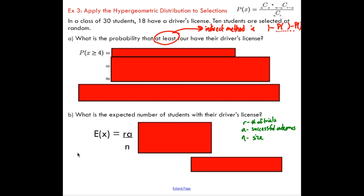We're looking at a hypergeometric situation. You've got 30 students, 18 have a driver's license, and you're selecting 10 at random. We want to know the probability that at least four have their driver's license.